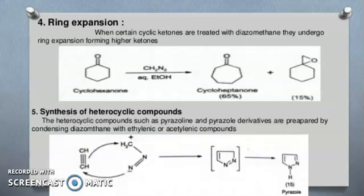Ring expansions. When certain cyclic ketones are treated with diazomethane they undergo ring expansion forming higher ketones. You can see 6 member ring converted into 7 member ring and 5% epoxide.